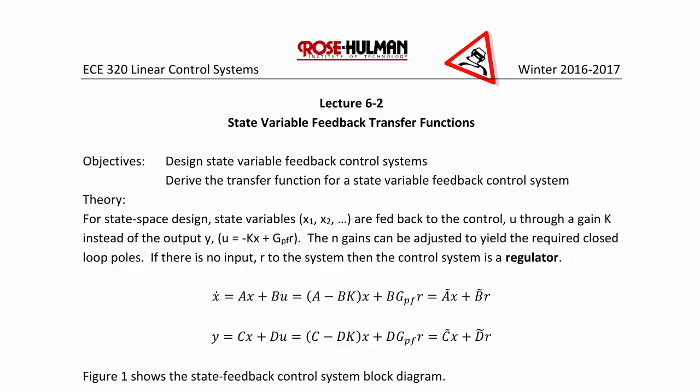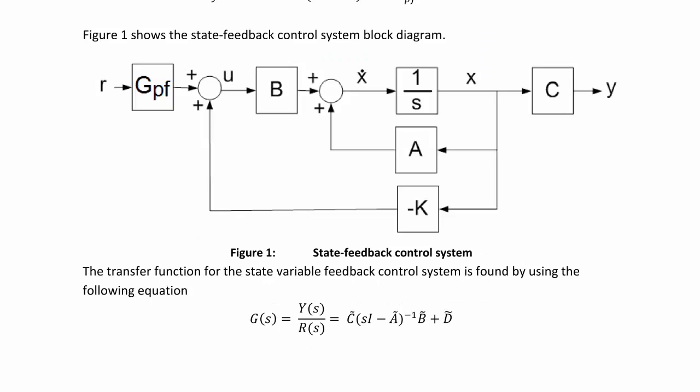Figure 1 below shows the state feedback control system block diagram. Here we have our input, and we have a pre-filter for scaling in case there's steady state error, and then here's our output and our error that feeds our controller.